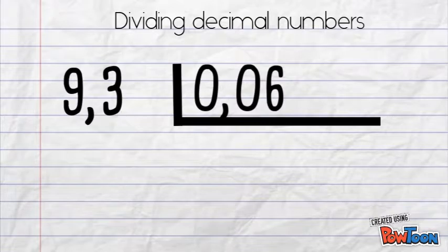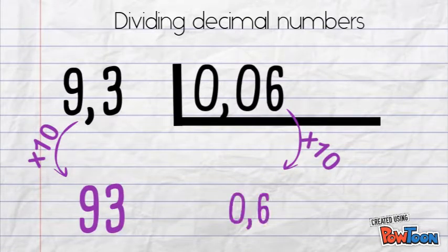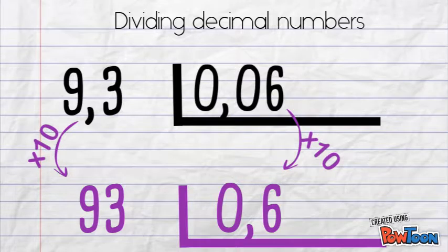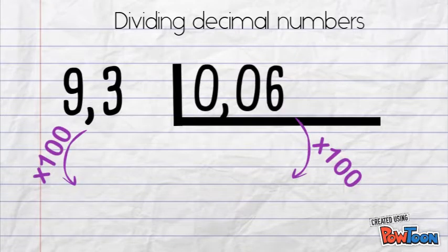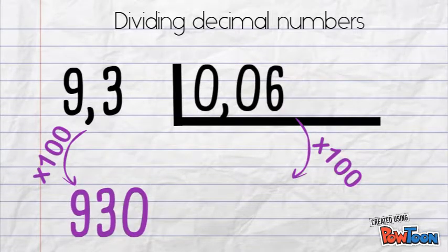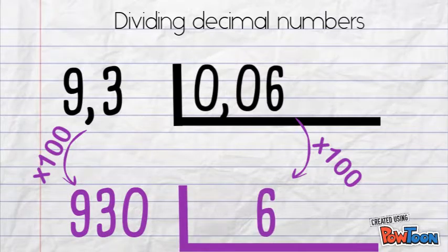I could multiply them times 10, but then I would still have 0.6 on the divisor. So, I'm going to multiply them times 100 instead. This leaves me with the equivalent division of 930 divided by 6.